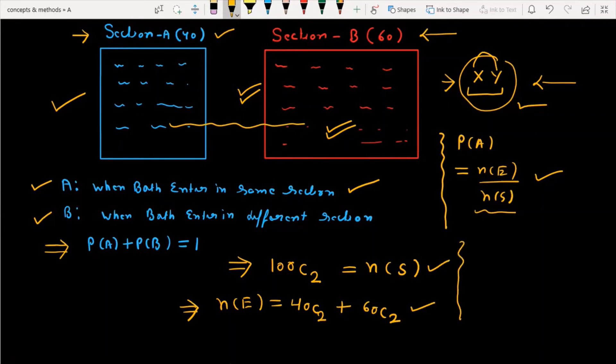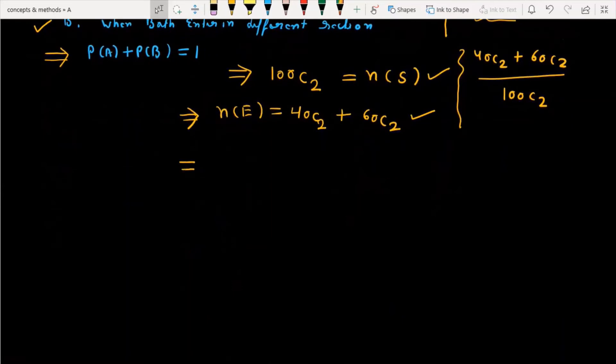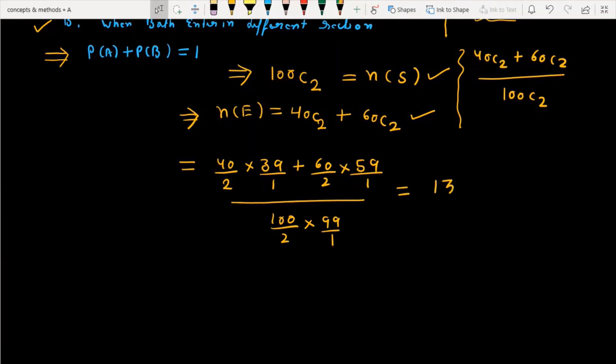Just feed this formula. So that will become 40C2 plus 60C2 divided by 100C2. Now, the next task is to manipulate this data. That will become 40 by 2 into 39 by 1 plus 60 by 2 into 59 by 1 divided by 100 by 2 into 99 by 1. And when you solve this, you will get 17 upon 33. That is the answer of the first part.